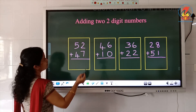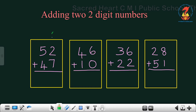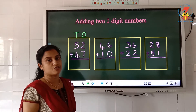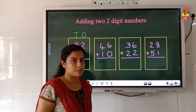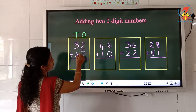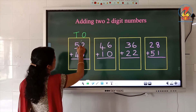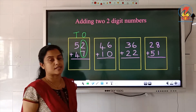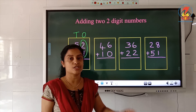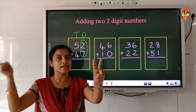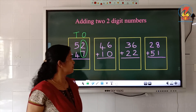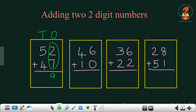What is the first step? Write the place values — this is the ones place and this is the tens place. Which number do we add first? We add the numbers in the ones place. Here which are the numbers in the ones place? 2 and 7. So first add 2 plus 7. How will you do 2 plus 7? 2 in the hand and 7 in the mind — after 7: 8, 9. So write 9 in the ones place.